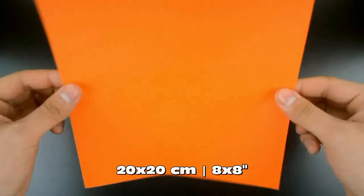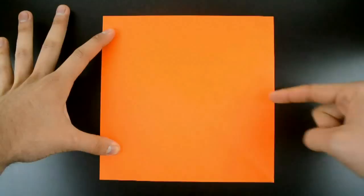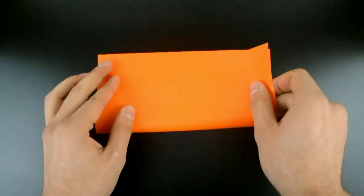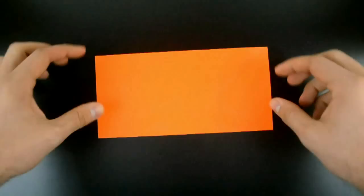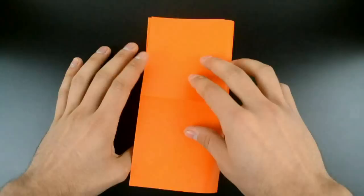The first step is to fold in half horizontally and vertically. So first bring the bottom edge to the top, like this, and make a crease. Now undo, bring the right side to the left and make a crease again.